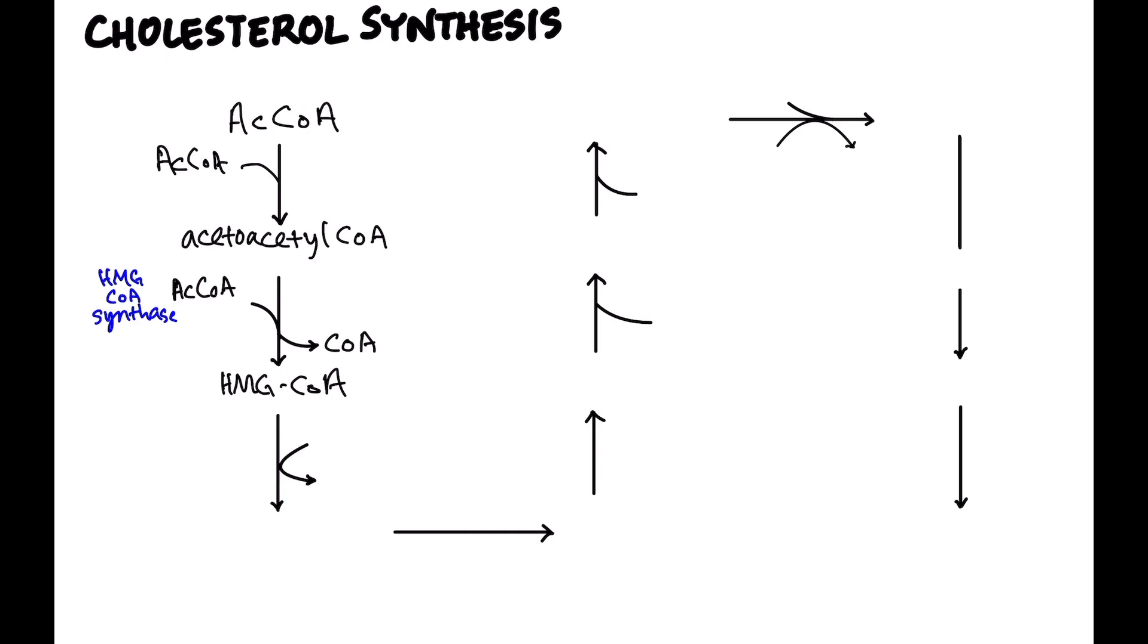So what we do is we take HMG-CoA and we reduce it. So we go from HMG-CoA to mevalonate. Now, it's important to know the name of this enzyme is HMG-CoA reductase. We're reducing HMG-CoA. And as we do this, we're obviously reducing, so we need something to do that reducing, and what is it? It's NADPH. So that's an important antioxidant and a reducing agent. And then, of course, we're getting NADP out of that.